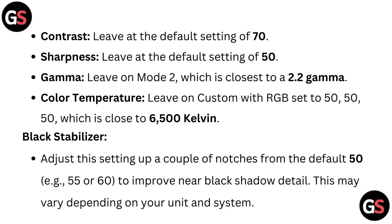Gamma: leave on mode 2, which is closest to a 2.2 gamma. Color temperature: leave on custom with RGB set to 50-50-50, which is close to 6500 Kelvin.